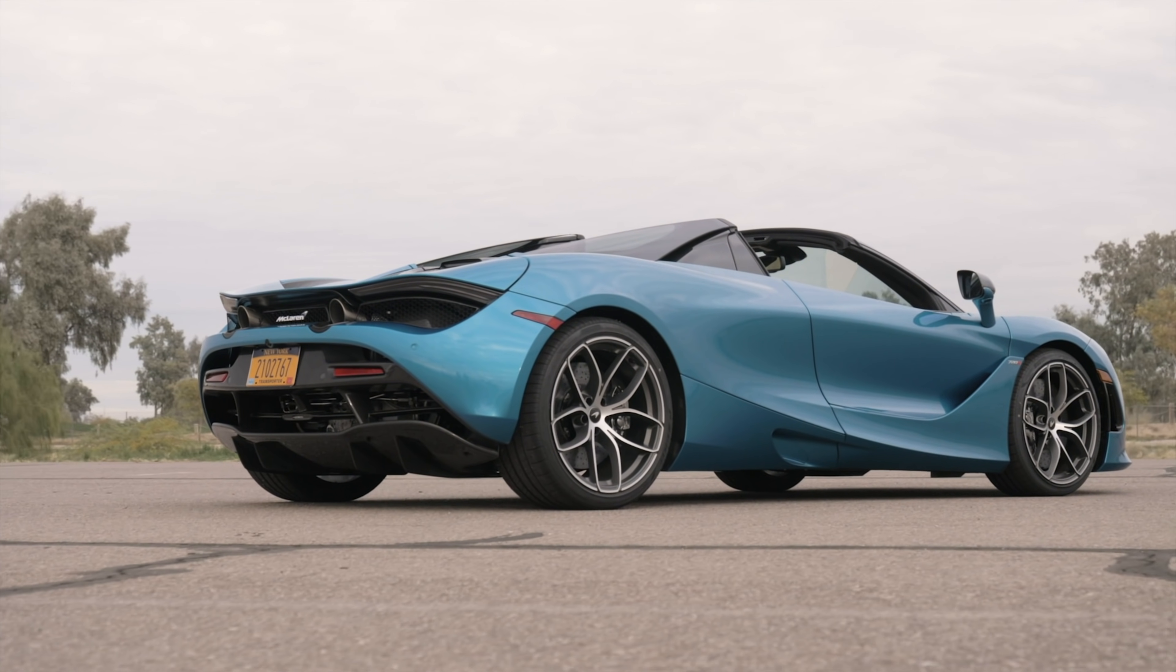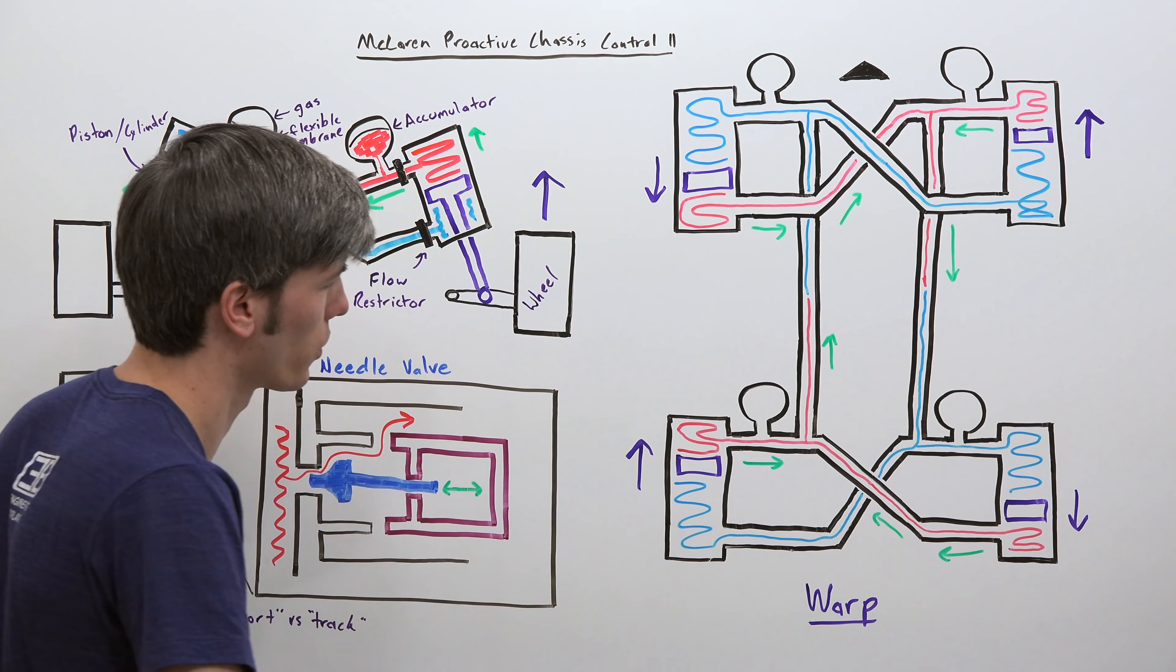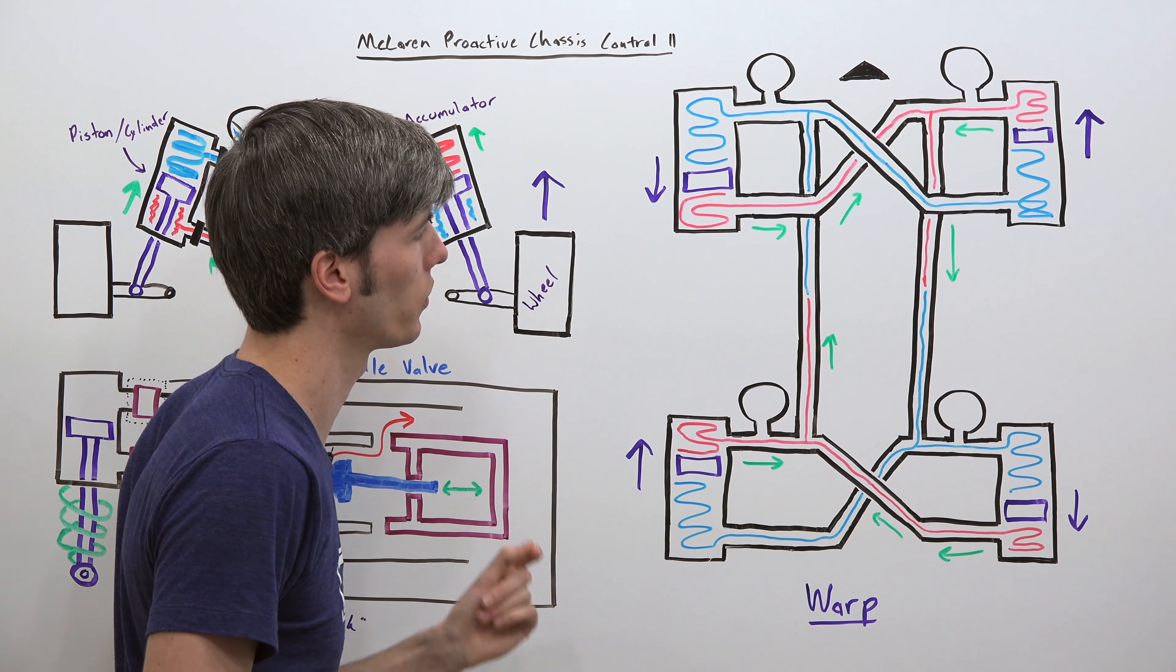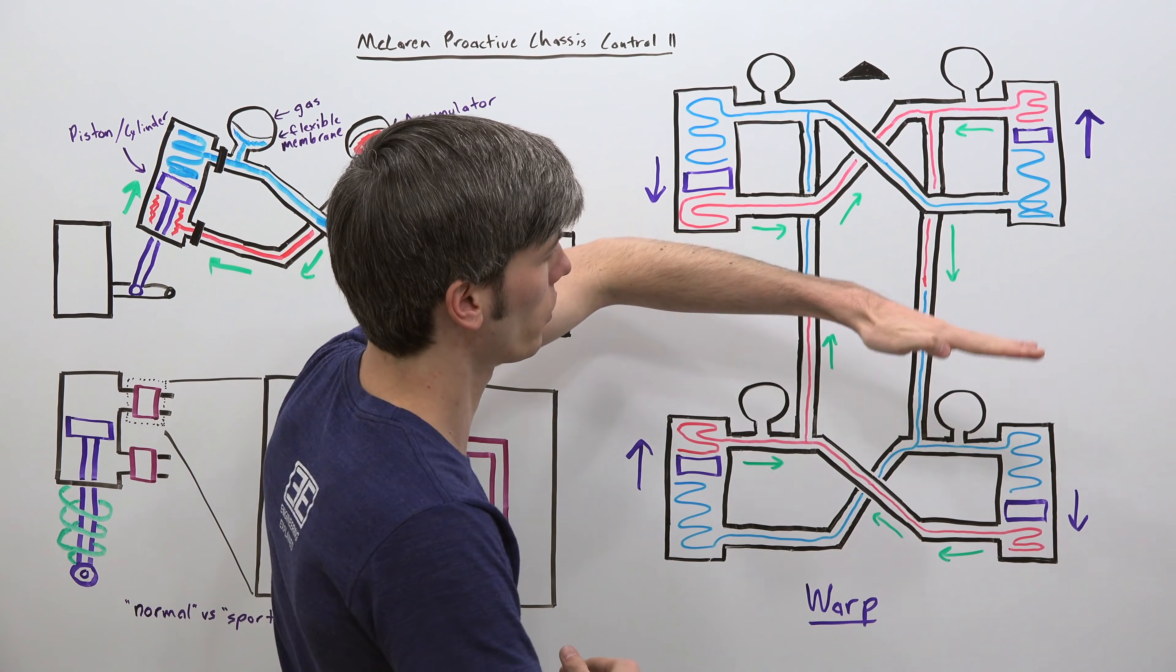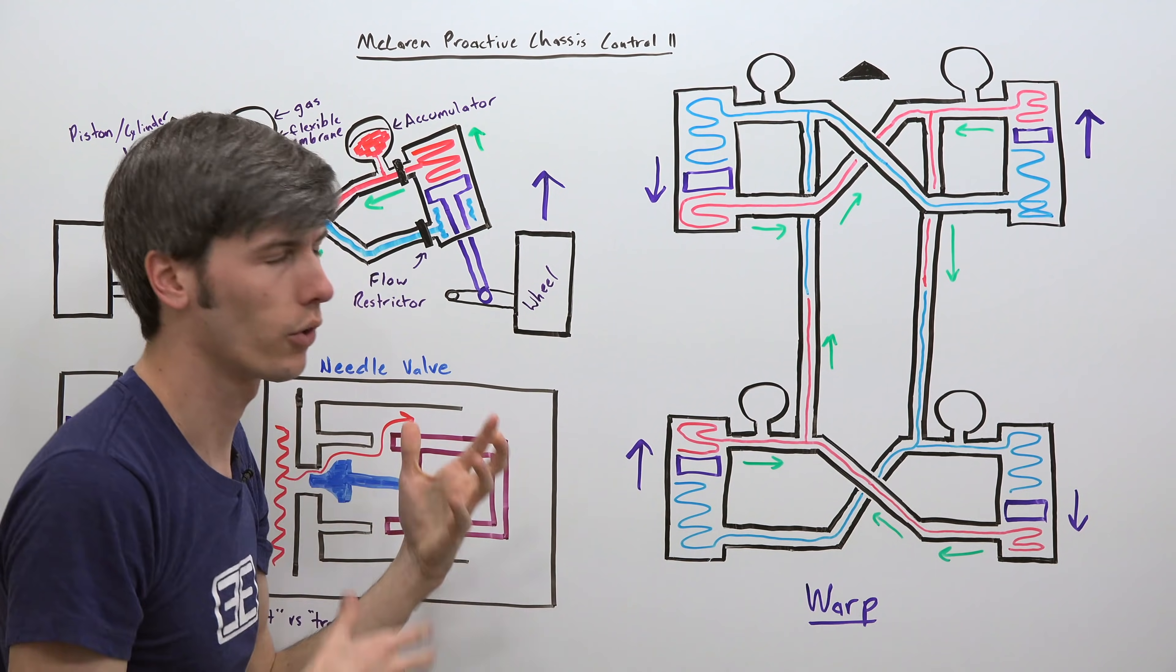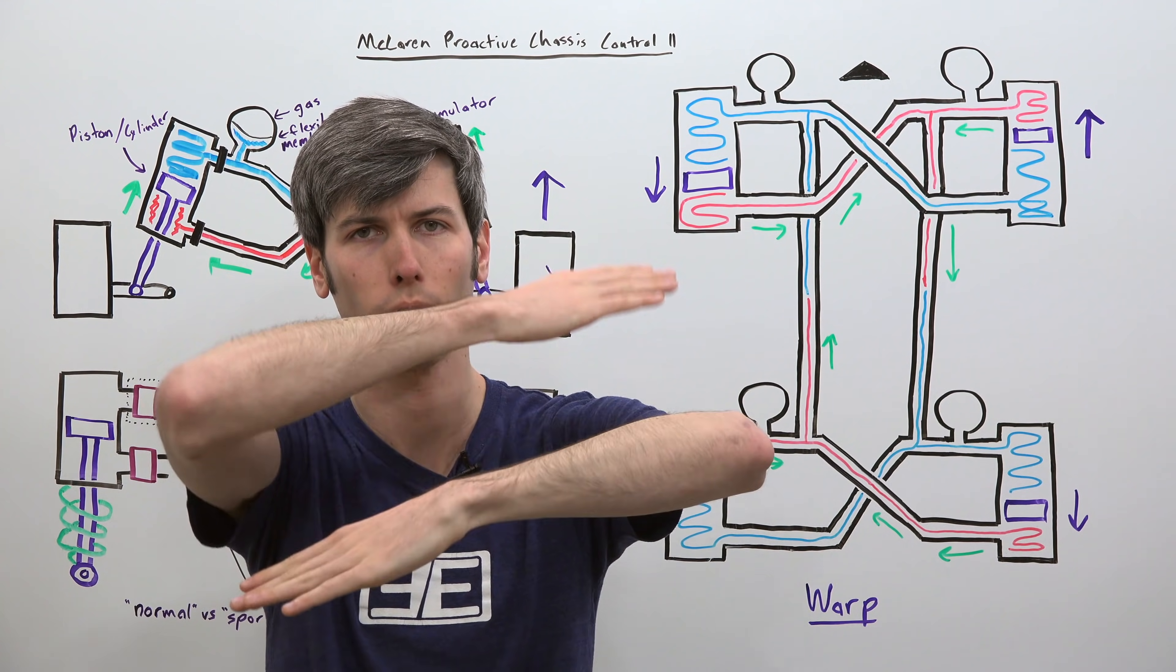Now our second scenario is warp and this really shows the advantages of McLaren's system versus a traditional anti-roll bar. And so warp is when the front axle is experiencing roll in the opposite direction of the rear axle. So let's say the front axle wants to lean like this, the rear axle wants to tilt like that, that is warp. And so this is a common occurrence when you're driving over regular roads that have different surface irregularities and both of those axles have to adapt to that road and make sure the wheels maintain contact.